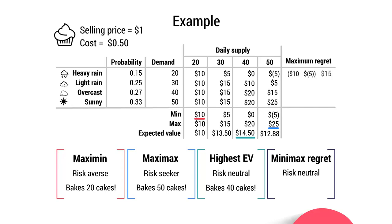For 40 cupcakes, the highest regret also occurs when demand is 20: you generate $0 but the maximum profit was $10, so maximum regret is $10. For 30 cupcakes, the worst regret occurs when it's sunny — you generate $15 in profit whereas you could have generated $25 by producing 50, so maximum regret is $10. For 20 cupcakes, when it's sunny you only generate $10 in profit whereas you could have generated $25, so maximum regret is $15.